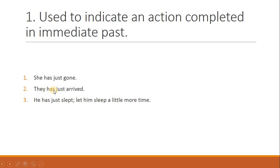Note: they کے ساتھ have آئے گا، has نہیں — یہ typing mistake تھی، اپنے register میں correct کر لیں: they have just arrived۔ He has just slept — let him sleep a little more time، وہ ابھی ابھی تو سویا ہے، اسے تھوڑا اور سونے دیں۔ اسی طرح اپنے sentences بنائیں — آپ نے ابھی ابھی کیا کیا، یا آپ کے گھر میں کسی نے کیا کیا، اور practice کریں۔